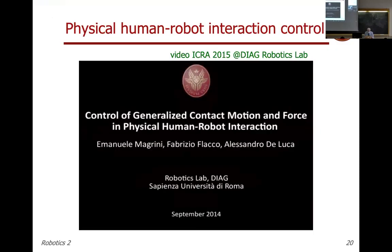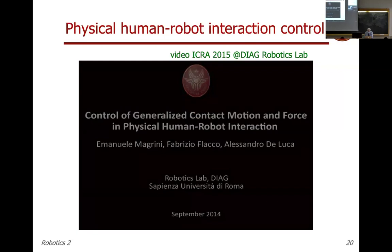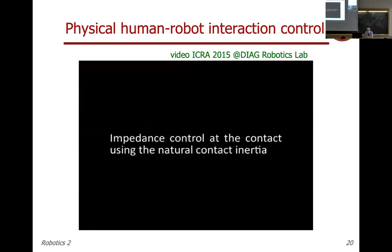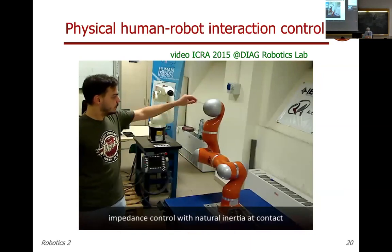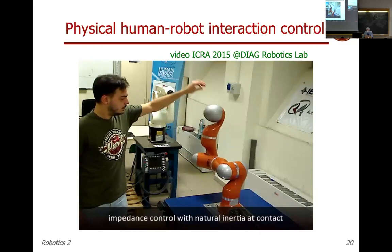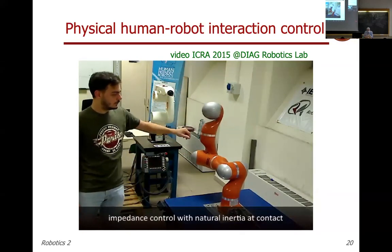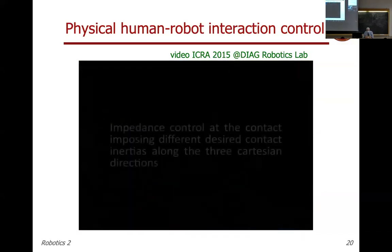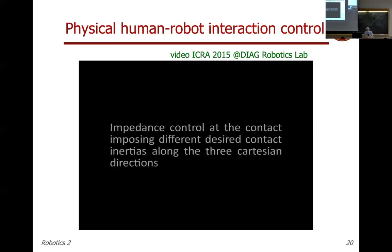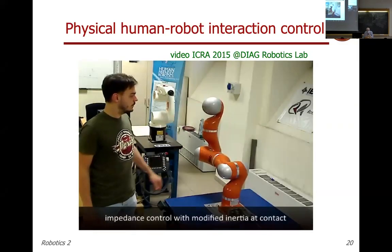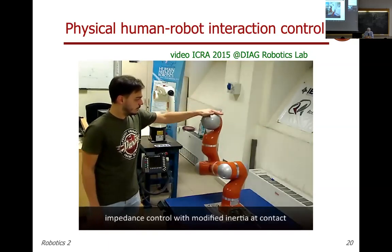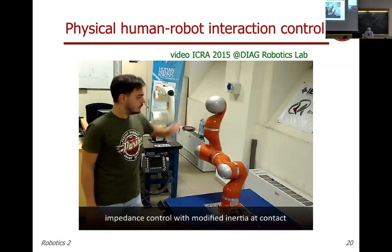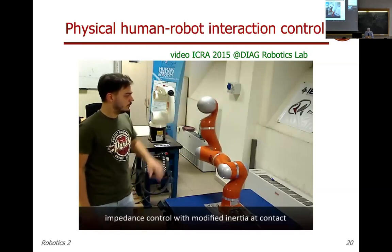We can see a further development: implementing impedance control not only at the end-effector level, but at any contact point on the robot body. Since we can detect where the contact is and estimate the contact force — even without sensors — we impose an impedance model at any point of contact. This is a generalization of impedance control where we can also modify the inertia at the contact point. The robot reacts to pushes at any point with the mass-spring-damper model.